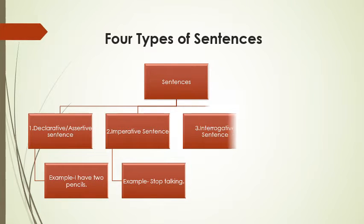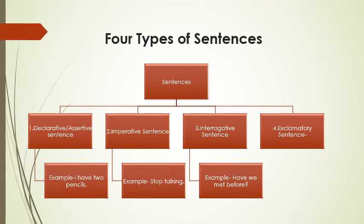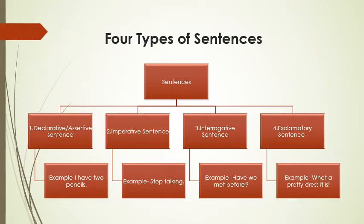Number 3, an interrogative sentence. For example, 'Have we met before?' And number 4, an exclamatory sentence. For example, 'What a pretty dress it is.'